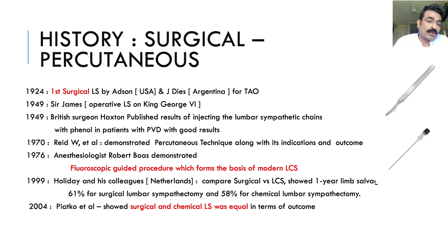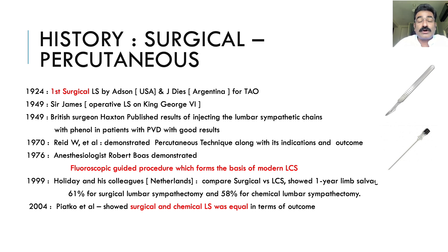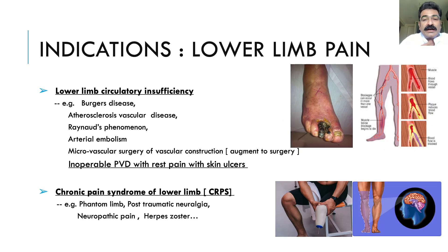This is not a recent procedure — it has evolved over a period of time. Nearly a century ago, in 1924, a surgeon cut this sympathetic chain and found very good results with pain relief of the lower limb. Over time, instead of cutting, surgeons painted the sympathetic chain with phenol and found it equally effective. The real game changer was when a needle was placed under fluoroscopy near the sympathetic chain and phenol was injected. It has been proven that surgical cutting and lumbar chemical sympathotomy have equal outcomes.